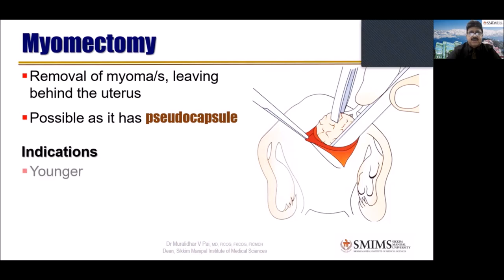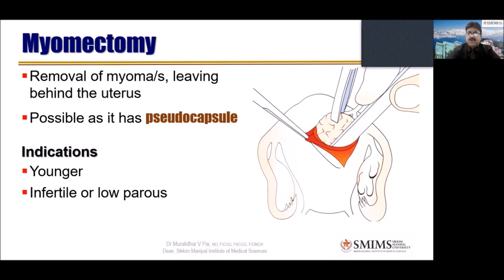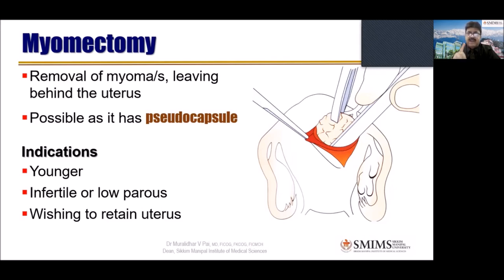The indications for myomectomy: younger age is an indication where you do not want to remove the uterus — married or unmarried. Then, a married woman who is infertile or low-parity and wants more children. Wishing to retain the uterus — I know a lady who was 40-42 years old who still wanted to keep the uterus, and we have to respect the patient's choice. So we cannot do hysterectomy; we have to do myomectomy or some other non-surgical techniques, which I will tell at the end of the talk.